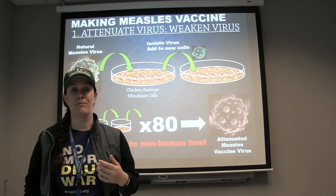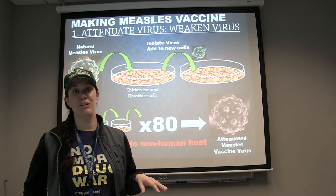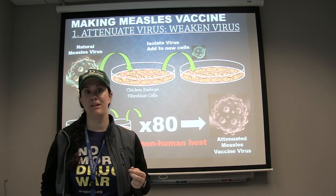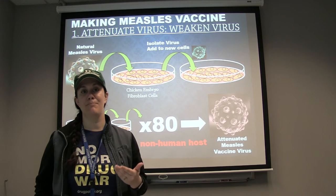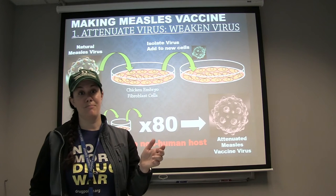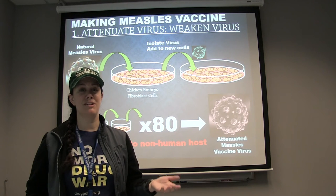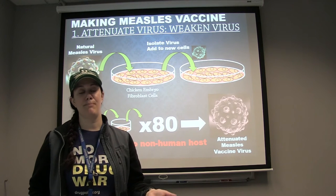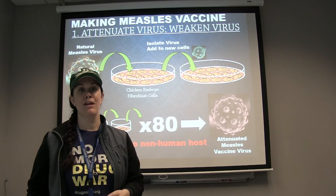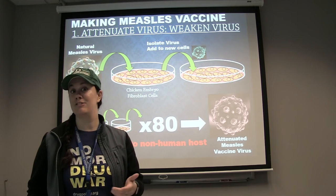Mutations are a very natural part of the viral life cycle. If a virus is put in a new environment, it's going to adapt and mutate so that it can best replicate in that environment. This is the whole concept behind attenuating a virus: we take the human measles virus and put it into a new, different species — typically into chicken cells — and we allow the human measles virus to adapt over time to this new host.